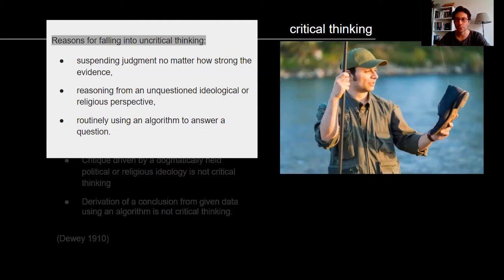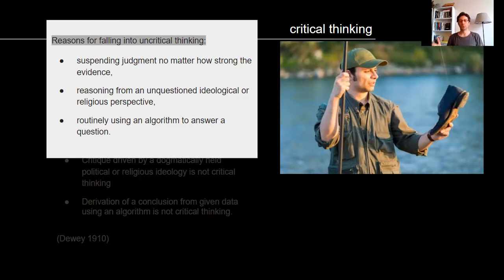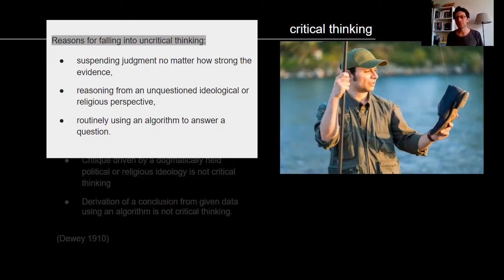Here are some reasons for falling into uncritical thinking: suspending judgment no matter how strong the evidence; reasoning from an unquestioned ideological or religious perspective; or routinely using an algorithm to answer a question. The third reason may be most relevant for our computational thinking class, but the other reasons are also relevant, as you will see in the example at the end of class.